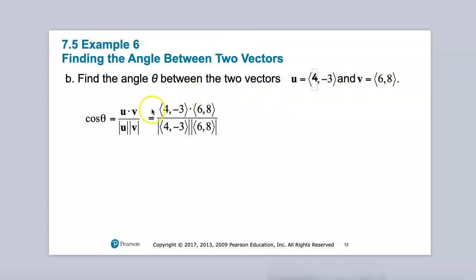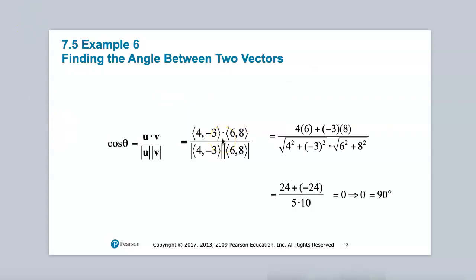Instead, we can go straight to using the geometric interpretation of the dot product, which the formula is on the bottom of page 340. We find the dot product of the numerator. And then we have the product of the two magnitudes for the denominator.